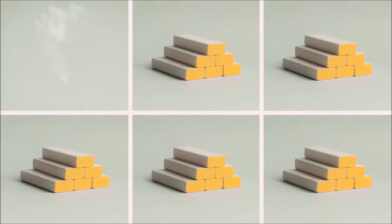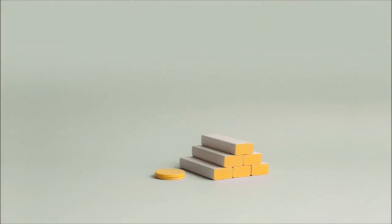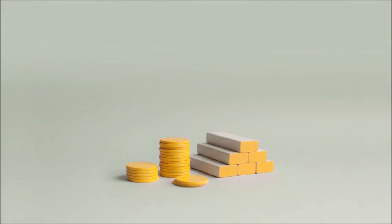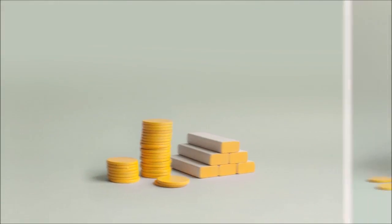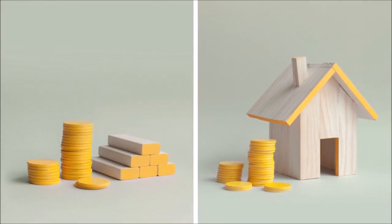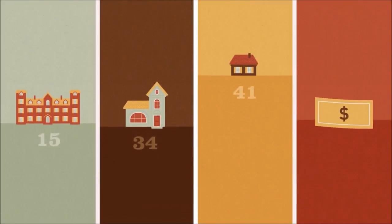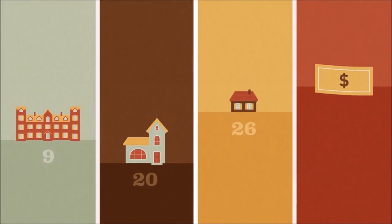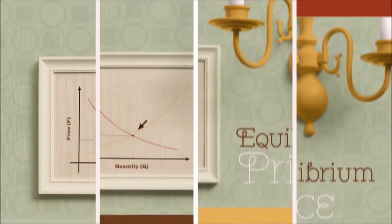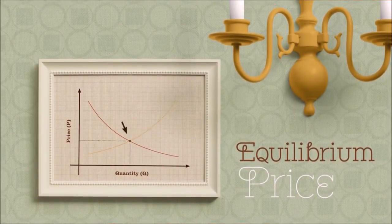And as the supply of lumber goes down, the cost of lumber goes up, which makes the cost associated with building homes go up. So fewer houses are supplied at all price levels, and again, that makes for a higher equilibrium price.